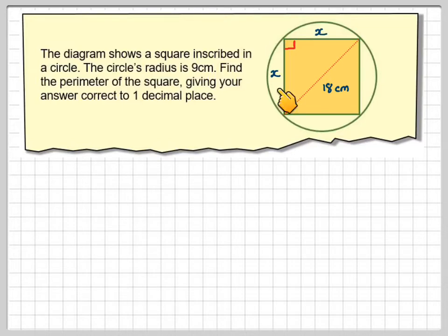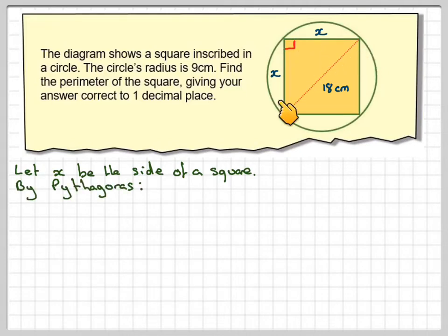If we call that length x and that length x, so let x be the side of the square. If one is x and the other is x because we've got a square, then by Pythagoras, these are the two smaller sides of this right-angled triangle, x squared plus x squared is equal to 18 squared.